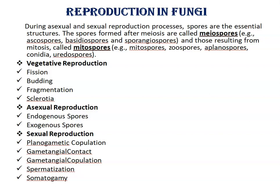Fungi reproduce vegetatively by means of fission, budding, fragmentation, and sclerotia. Asexual reproduction occurs by means of endogenous spores or exogenous spores. Sexual reproduction in fungi includes various methods like planogametic copulation, gametangial contact, gametangial copulation, spermatization, somatogamy, etc.